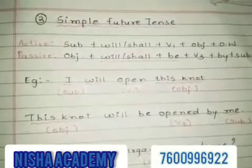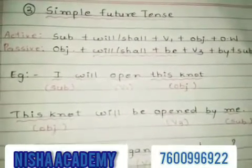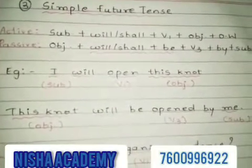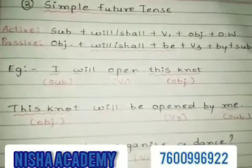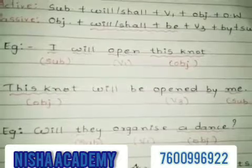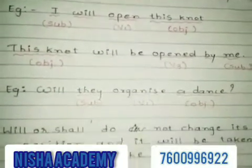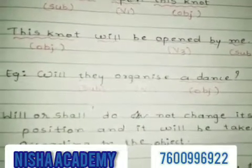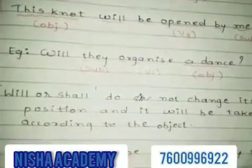Now let us understand the third tense: simple future tense. Active voice formula: Subject + will/shall + V1 + Object + Other words. Passive formula: Object + will/shall + be + V3 + by + Subject + Other words. For example: 'I will open this knot.' In passive: 'This knot will be opened by me.' For interrogative: 'Will they organize a dance?' Will/shall does not change its position and is taken according to the object. Passive: 'Will a dance be organized by them?'